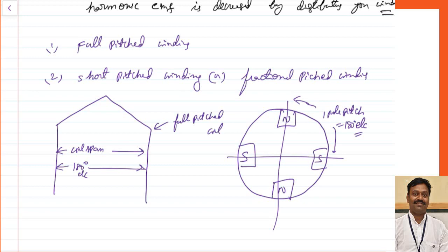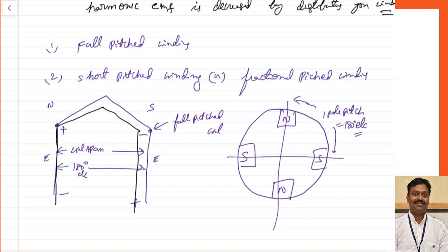The advantage of a full pitched coil is that whatever EMF is induced on one side, the other side will be exactly 180 degrees opposite. If one side is under north pole, the other will be under south pole, so the EMFs add directly. For a short pitched winding, we keep the coil span less than 180 degrees, and this difference is a factor defined by the cording angle or cording factor.